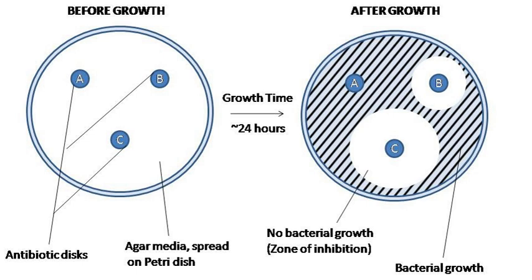A pure bacterial culture is suspended in buffer, standardized to turbidity and swabbed uniformly across a culture plate. A filter paper disc, impregnated with the compound to be tested, is then placed on the surface of the agar. The compound diffuses from the filter paper into the agar.